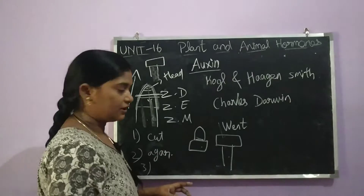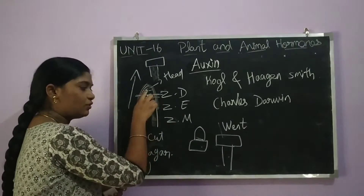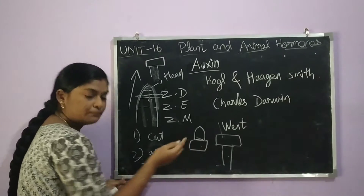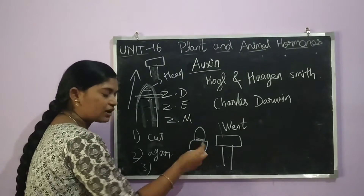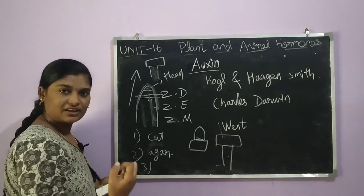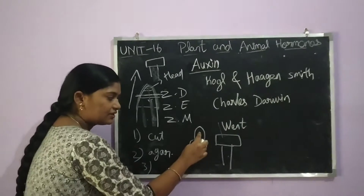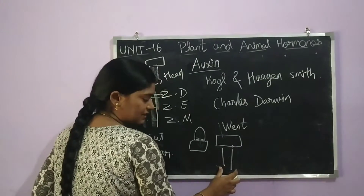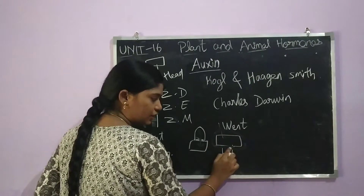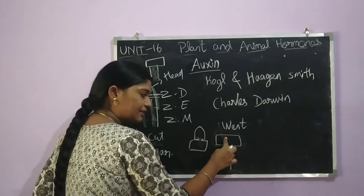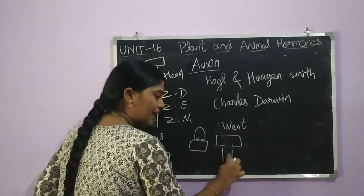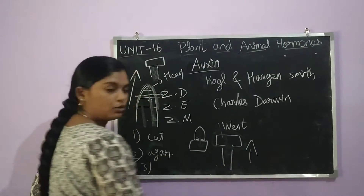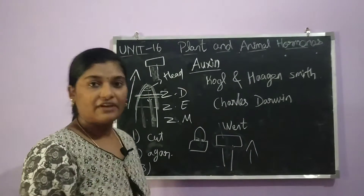If you cut the tip, the agar block absorbs the chemical substance from the tip. This chemical substance will then promote plant growth. Both the agar block and the plant will promote growth. This is Went's experiment, which is one of the important experiments.